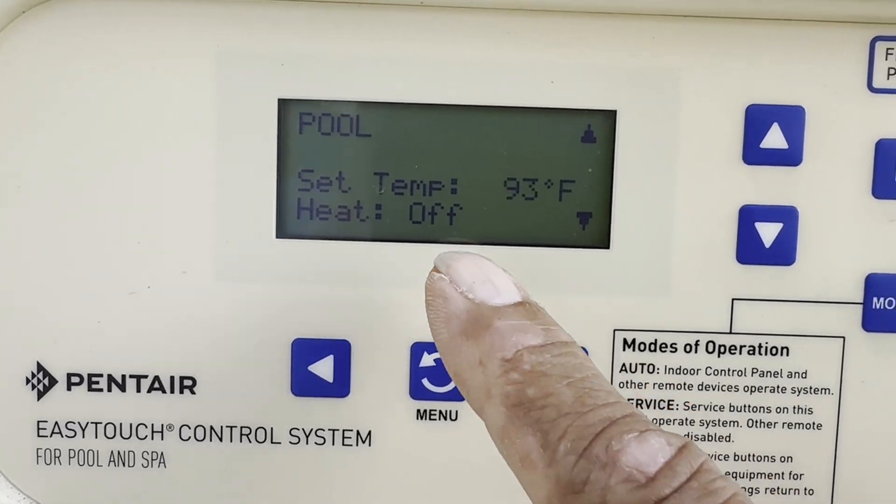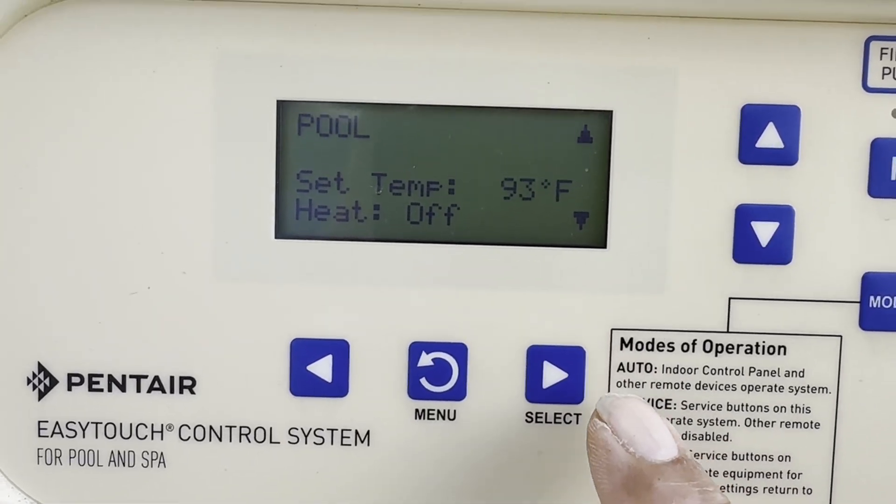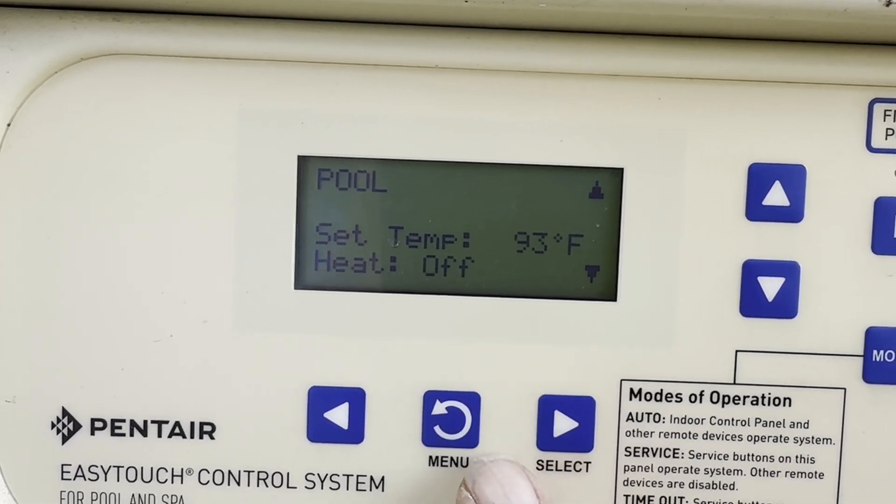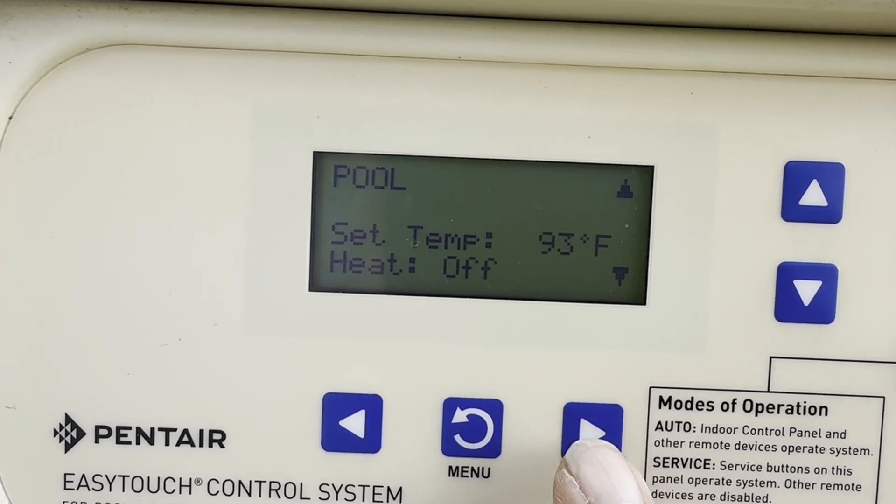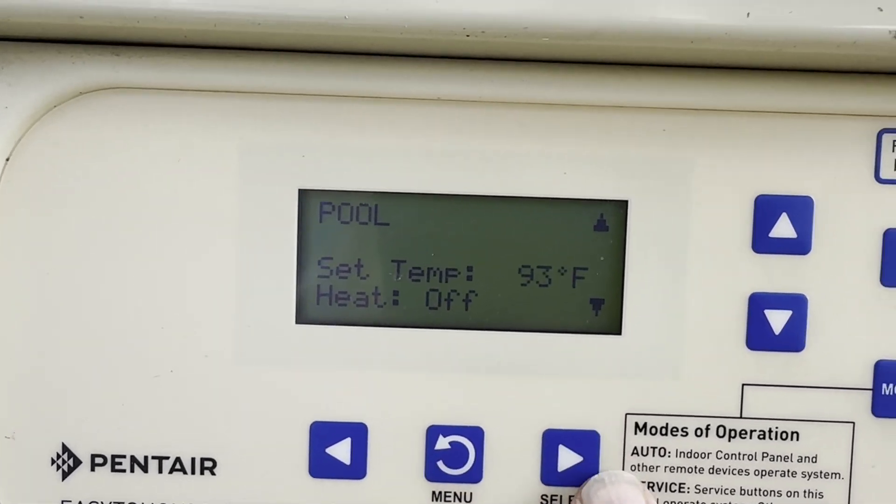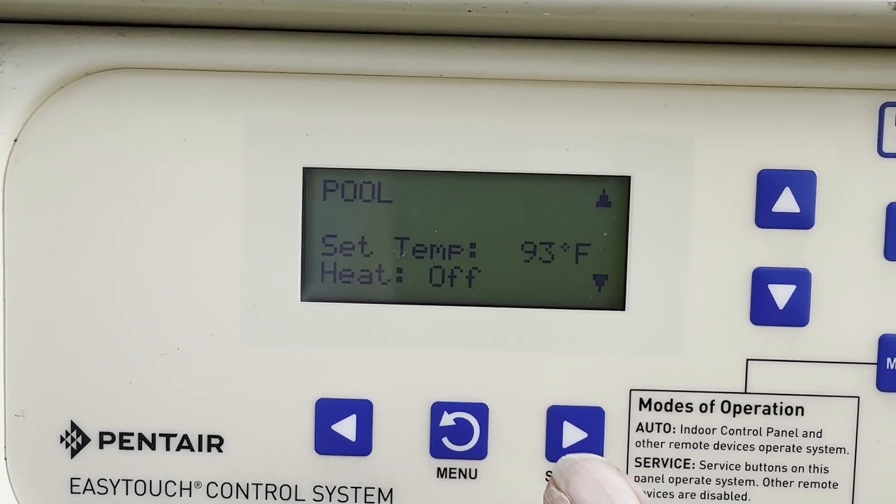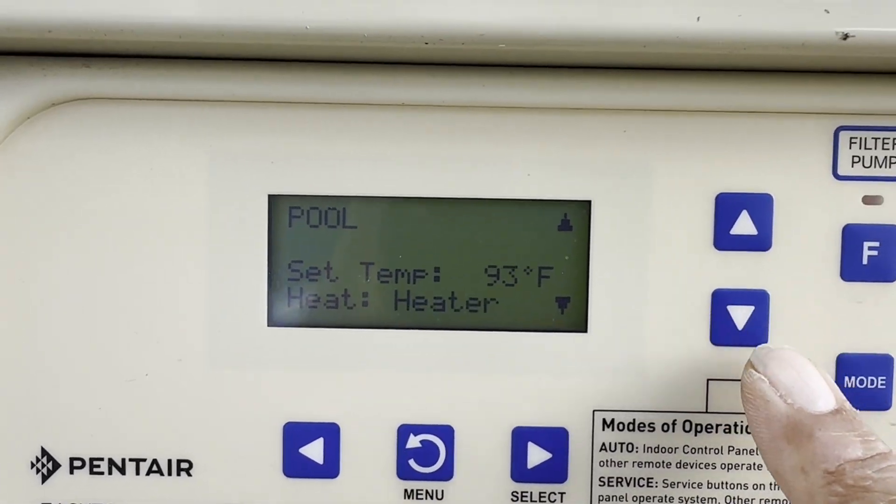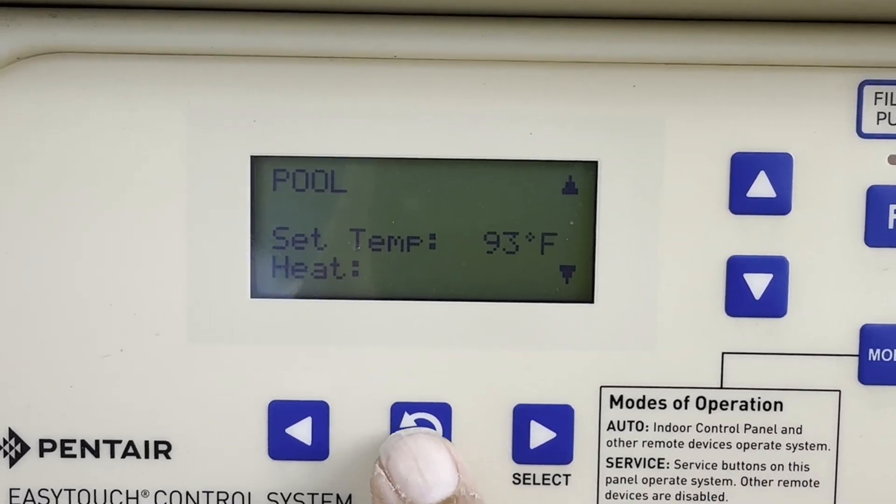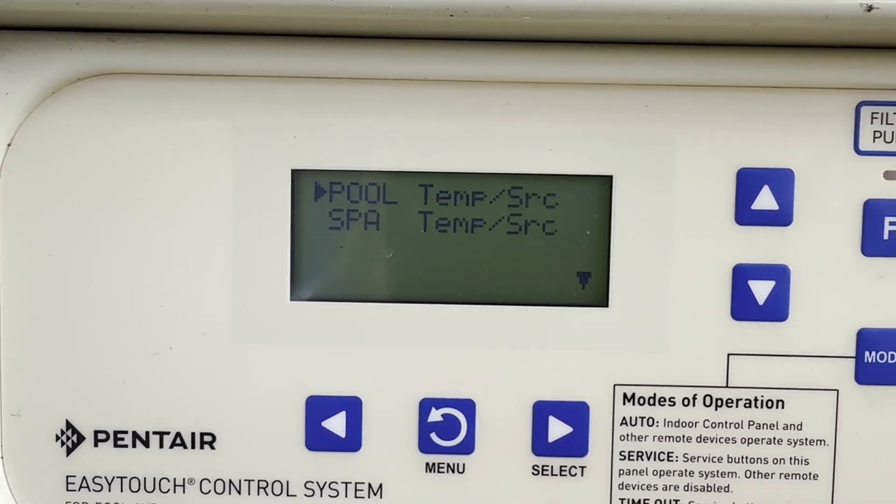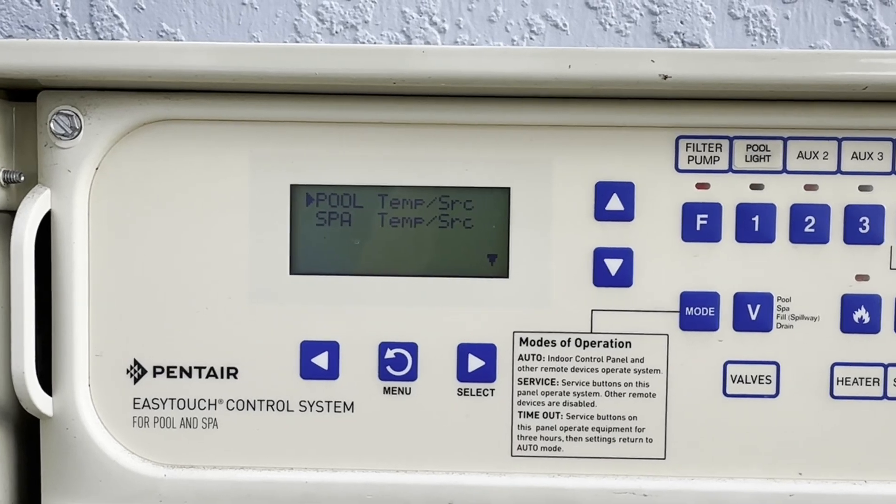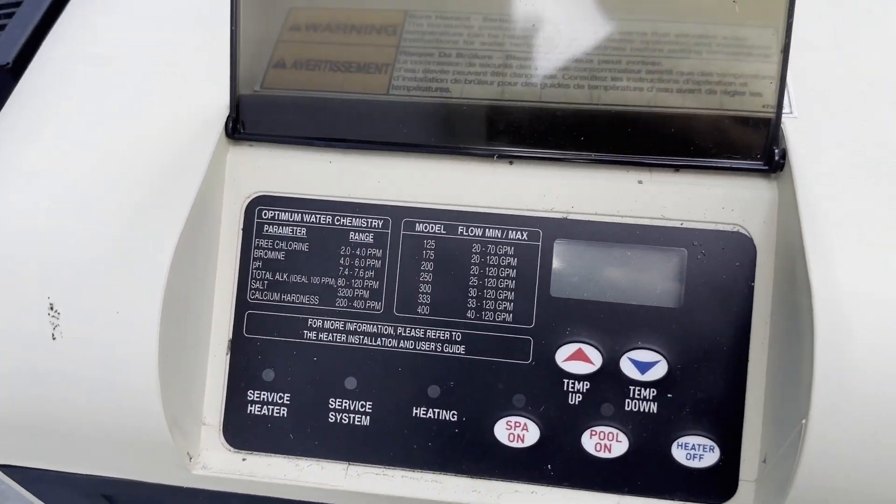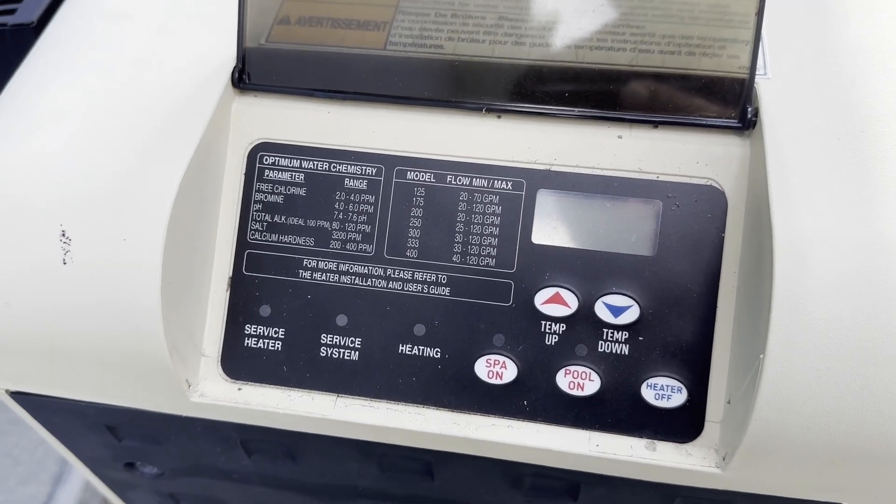So the heater is off. Right there it says it. So we hit the select button and you see that the temperature starts to flash off. And then we turn it to heater and then we hit the menu button. Now the heater has been energized and it's going through its stages of initializing.